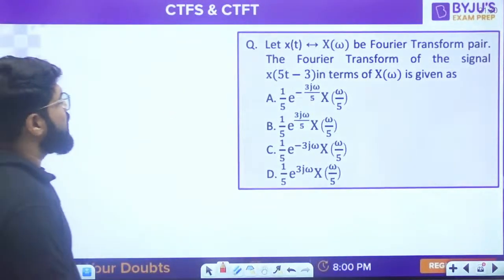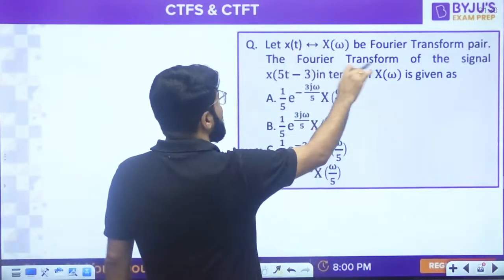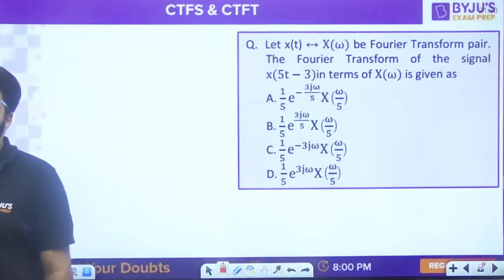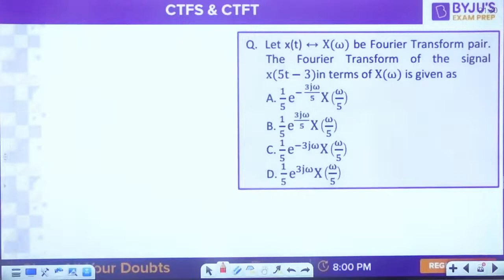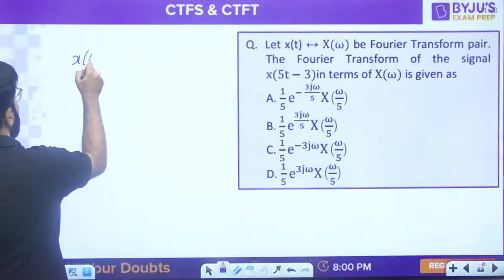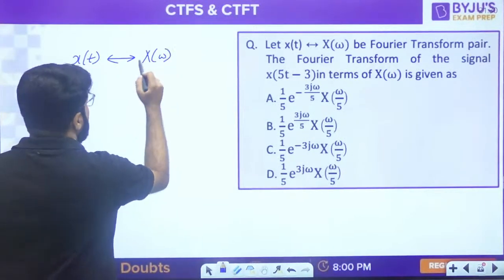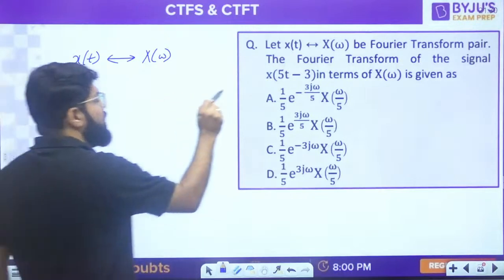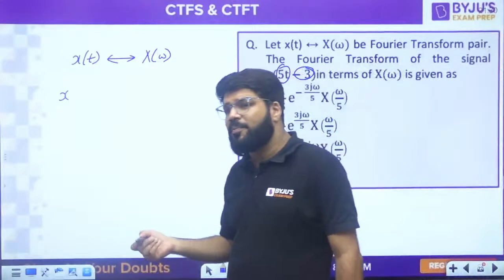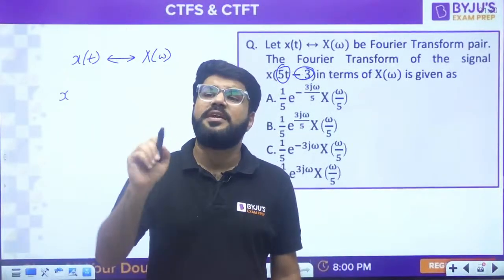Let x(t) have Fourier transform X(ω). What is the Fourier transform of x(5t - 3)? Property-based question - here there is both shifting and scaling. Whether to apply shifting property or scaling property? We follow the precedence rule - the same rule used when sketching signals.